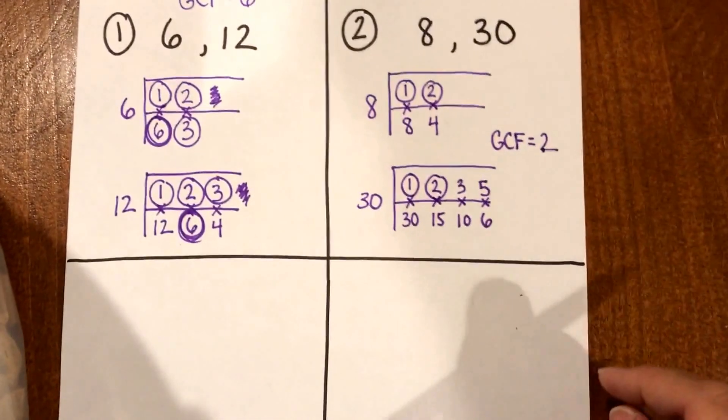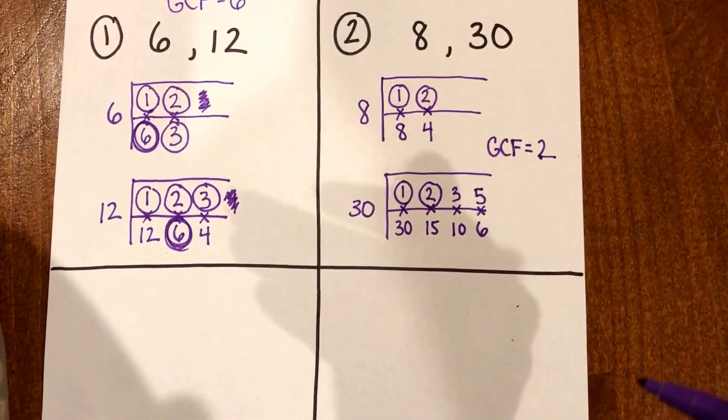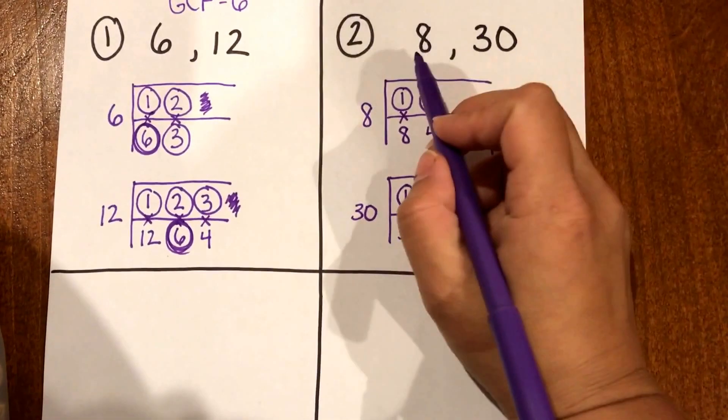So on the bottom section I'm going to show you the Euclidean algorithm or the division way to finding the greatest common factor also using 8 and 30.